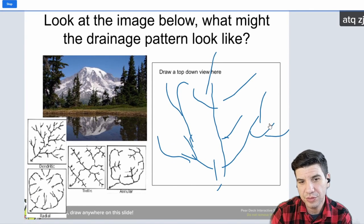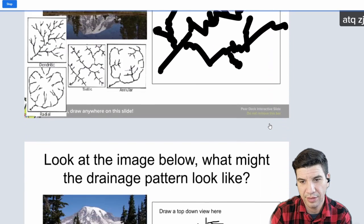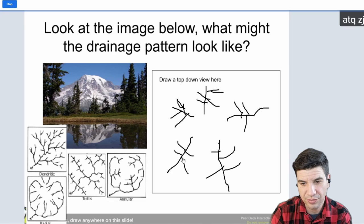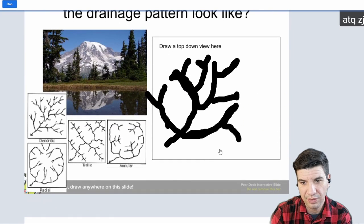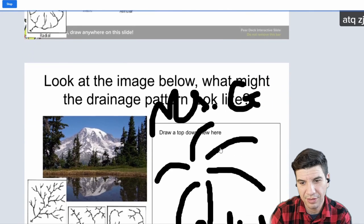All right, so this person drew a dendritic. Not correct. Another dendritic. Okay, cool. So, this one's more of a radial. You can see how it's coming down the sides. Now, you want to just make sure that these rivers are all pointing down the hill. All right. This one's kind of dendritic. I'm not sure what's going on here.